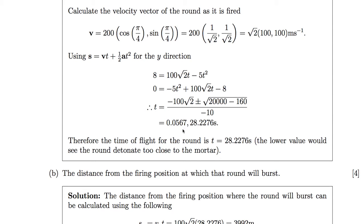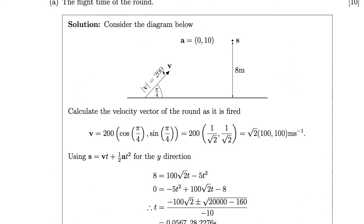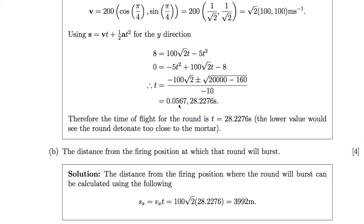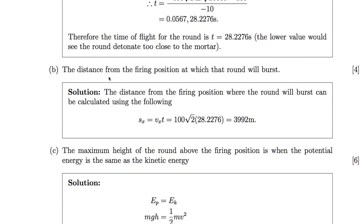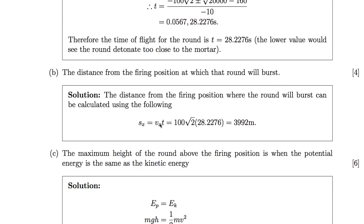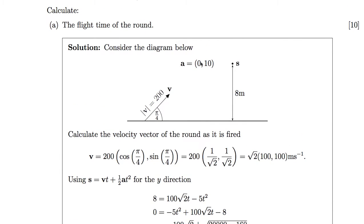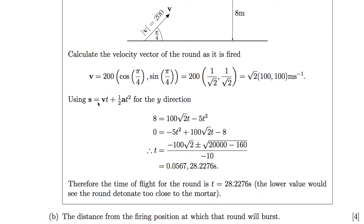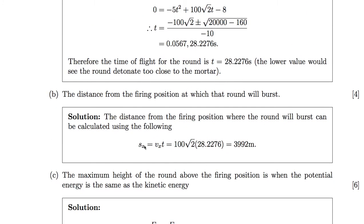The first value, 0.05, is far too close to our mortar so we wouldn't want it exploding there. The second value gives us the desired burst point S. The distance from the firing position where the round will burst is the x-direction distance. Since there's zero acceleration in the x-direction, it's simply S = Vx · t, giving us 3,992 metres.